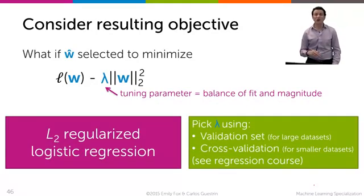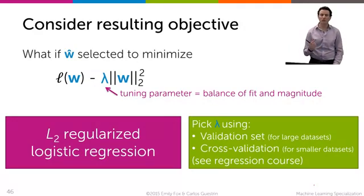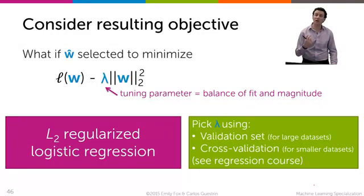So you either use a validation set, if you have lots of data, or use cross-validation for smaller data sets. So in the regression course, we cover this picking parameter lambda for the regression setting, and it's the same kind of idea here. Use a validation set or use cross-validation, always.